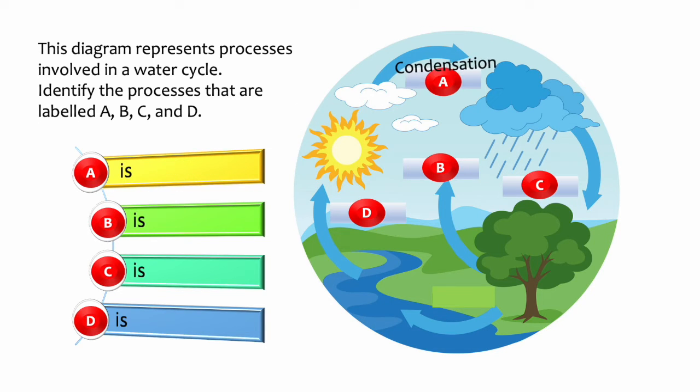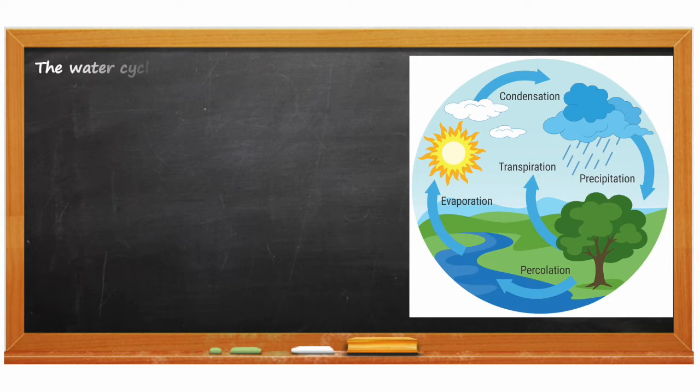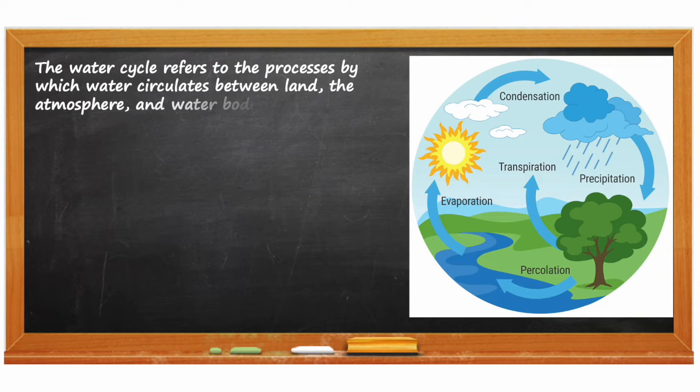A is Condensation, B is Transpiration, C is Precipitation, and D is Evaporation. The water cycle refers to the processes by which water circulates between land,